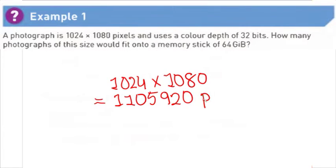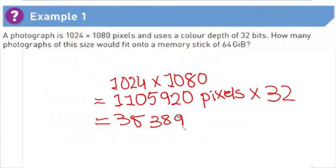This would be 1024 times 1080, which would give us the answer 1105920 pixels. Now, we are going to multiply the number of pixels by color depth, which is 1105920 times 32, which would give us the answer 35389440. Now, we would divide this by 8 to give the number of bytes. Dividing this by 8 would result in the answer 4423680 bytes.